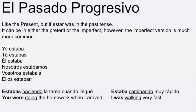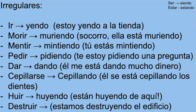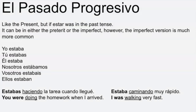Getting into the past progressive, or el pasado progresivo, it's essentially the exact same thing as all of this. However, estar is just in the past tense — it's an action that happened. Estar can be conjugated in the preterite or the imperfect, but the imperfect version is significantly more common — I rarely hear the preterite one. So here are the conjugations of estar in the imperfect: yo estaba, tú estabas, él estaba, nosotros estábamos with the accent, vosotros estabais, ellos/ellas/ustedes estaban.